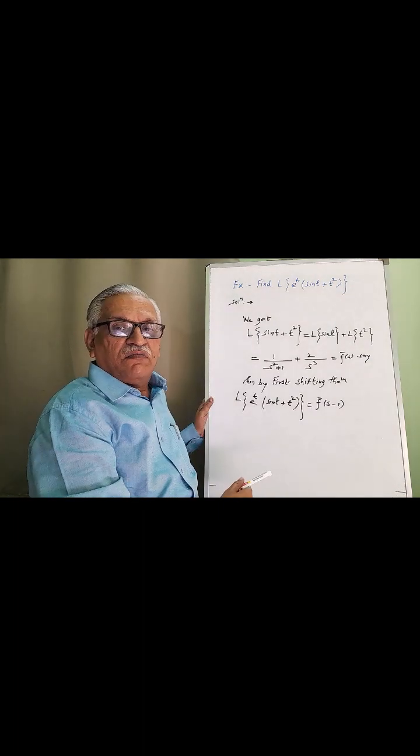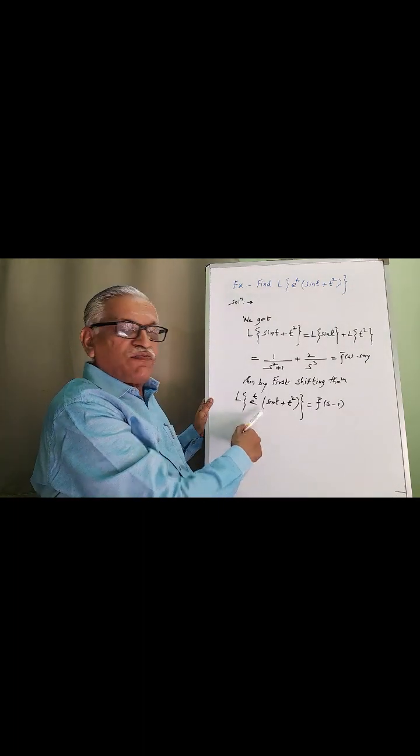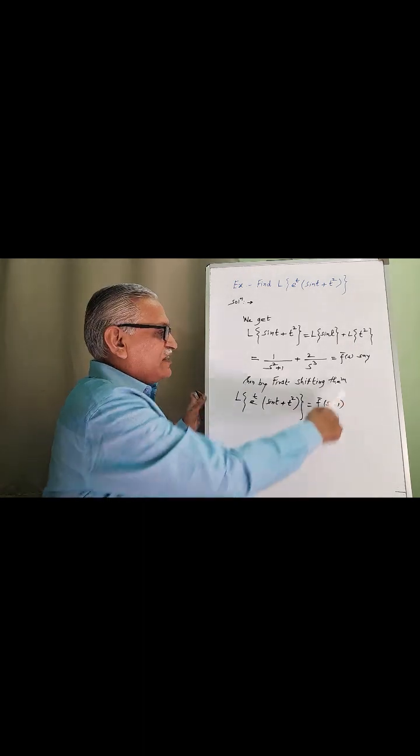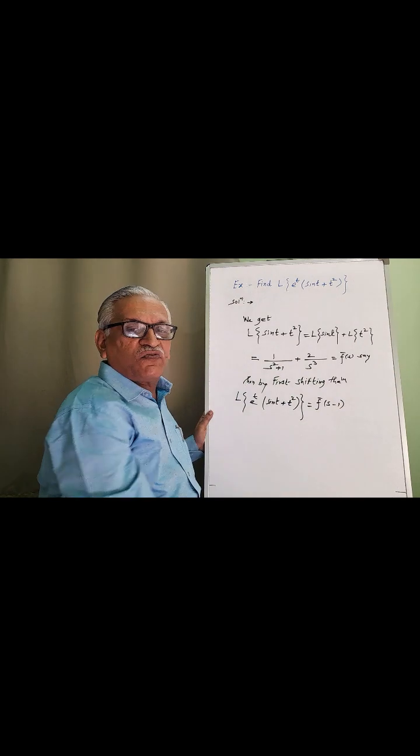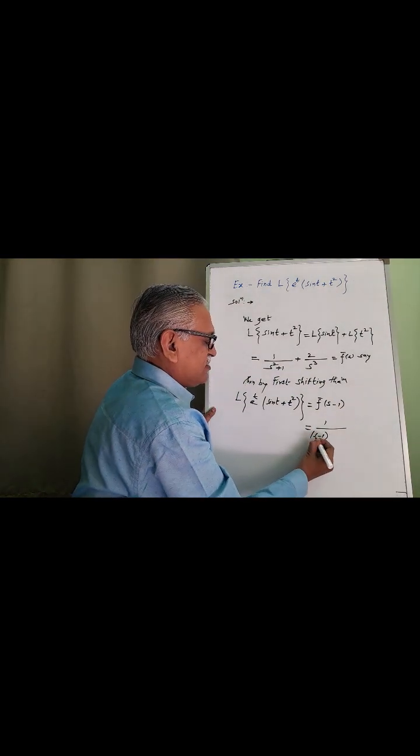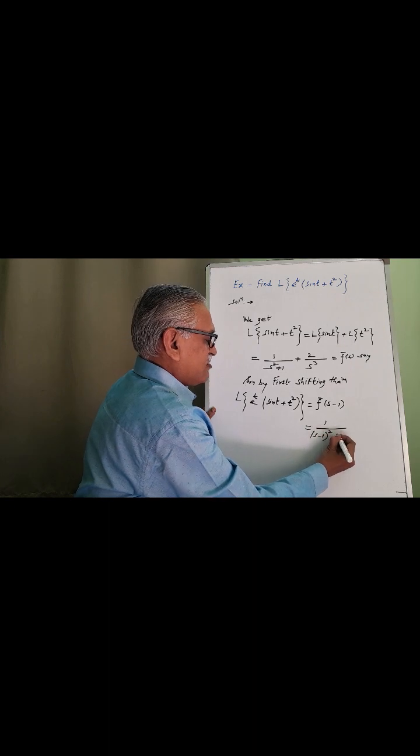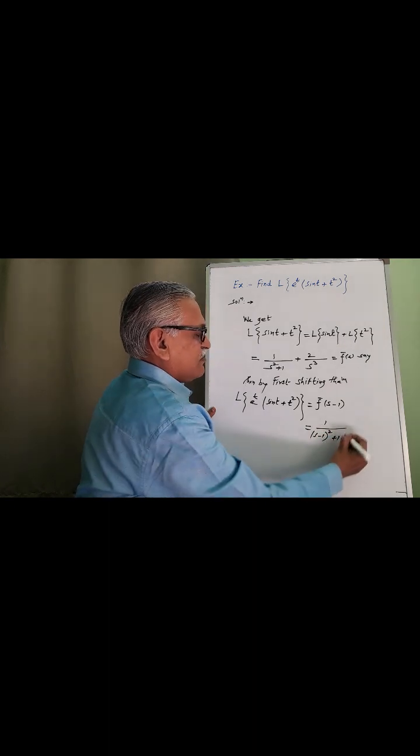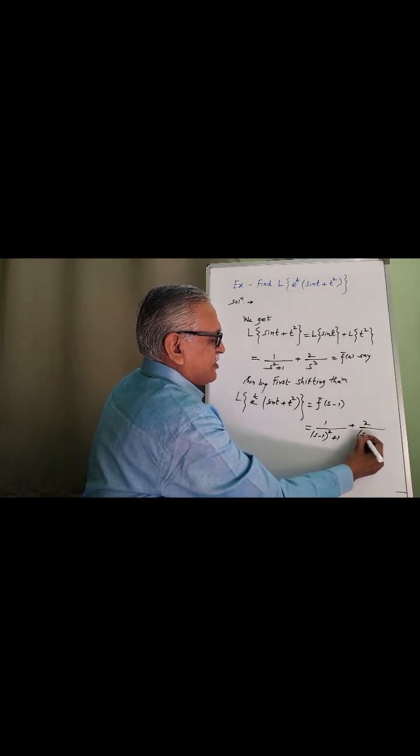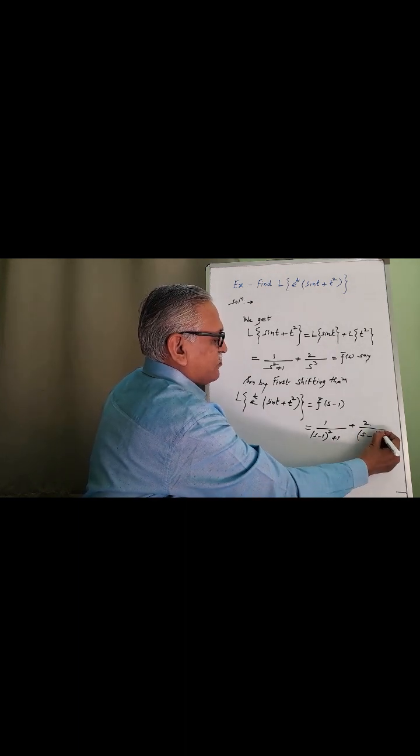Then by first shifting theorem, Laplace transform of e raised to t multiplied by sin t plus t square is f bar of s minus 1: as 1 upon s minus 1 whole square plus 1 plus 2 by s cube. S replaced by s minus 1, therefore s minus 1 cube.